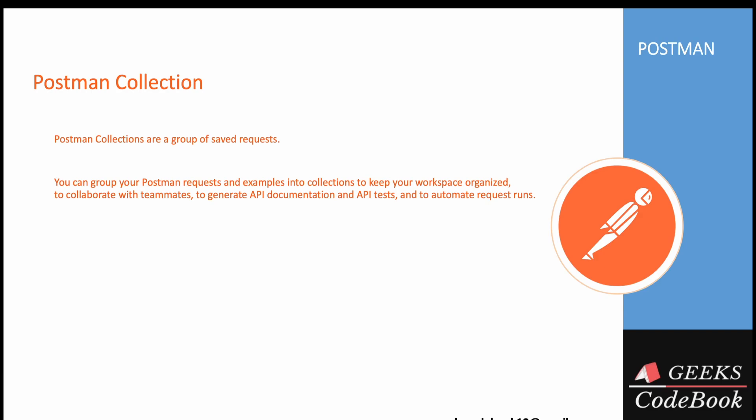A Postman collection is used to save your requests in a group. Let's say you have a number of requests and you want to categorize or group some requests based on whatever criteria you have — you can save them in a particular collection. Every request should go into a collection; you can have multiple collections and save any number of requests in each collection.